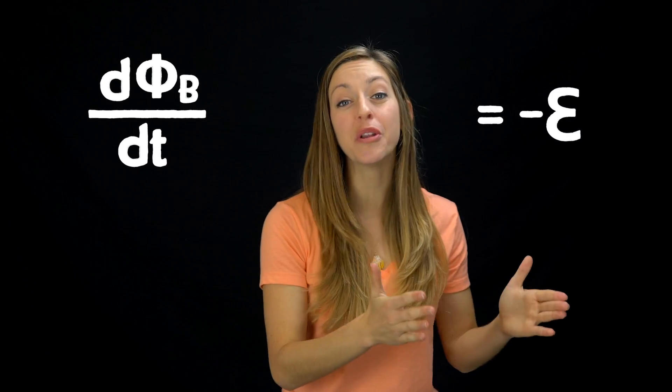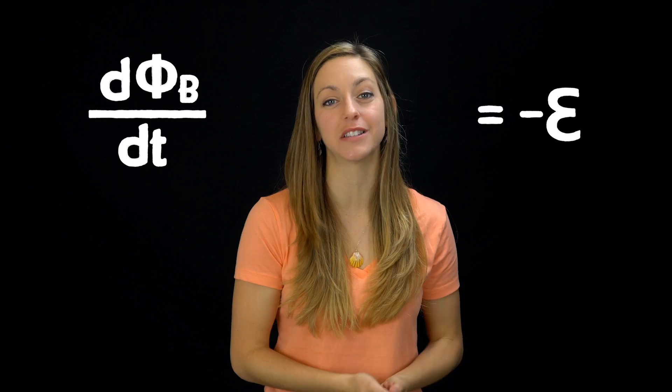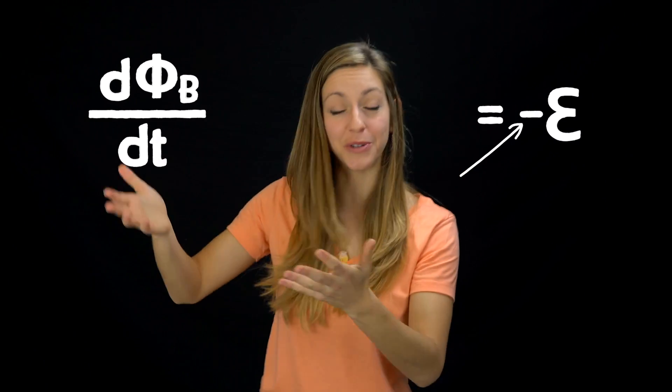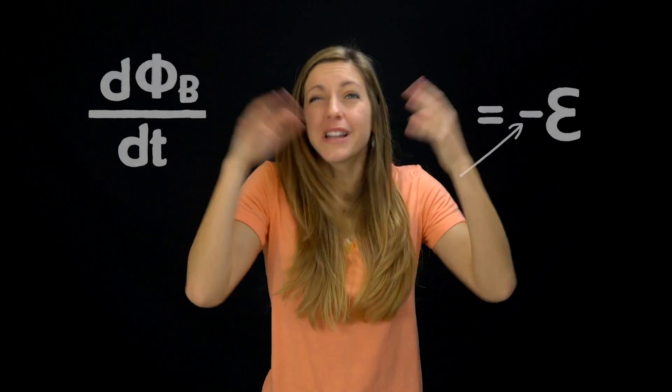Now, this change in magnetic flux causes an electromotive force, which acts like a voltage. And that pushes back against the change in current that changed the magnetic flux. But what does this all mean? The math is there, but what does it mean?